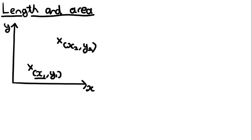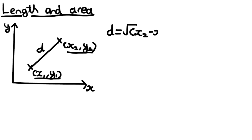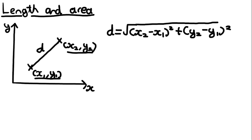Let's pretend we're given two random points in a graph: x1, y1 and x2, y2. We can find the distance between these two points — we're going to call this d — as the square root of (x2 minus x1) squared plus (y2 minus y1) squared. This is not given in the formula booklet, so you will actually need to remember this formula.